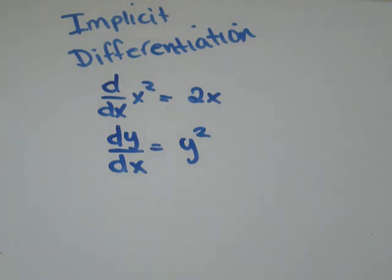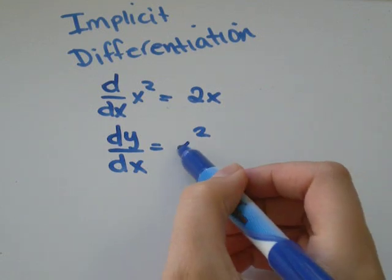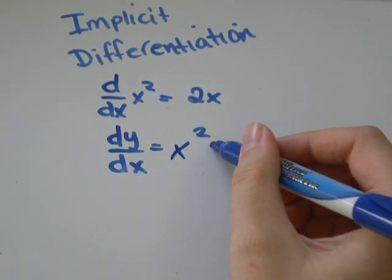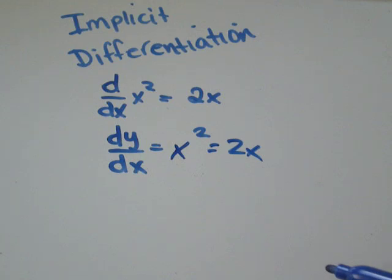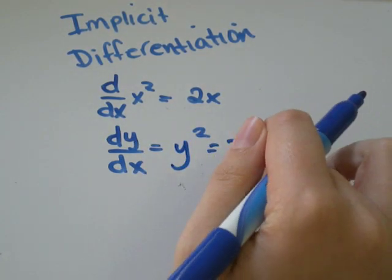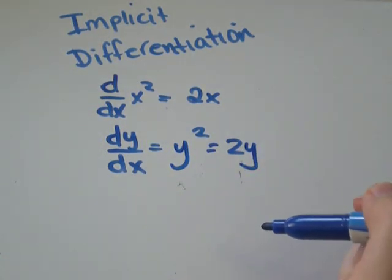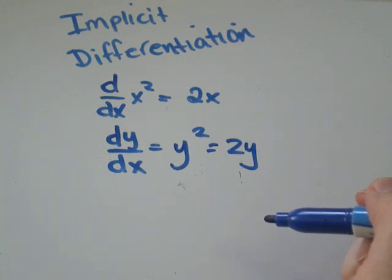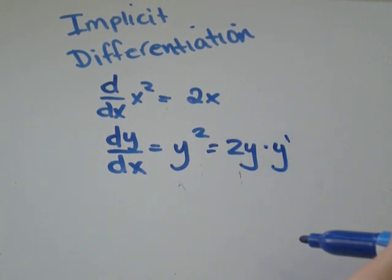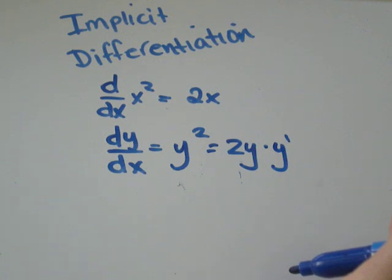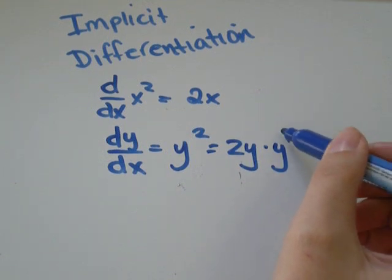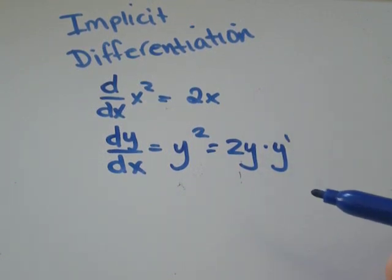So why don't we do the implicit derivative of y². The first thing you do is you think, if this was x, what would the derivative be? It would be 2x. But it's not x, it's y. And y is some function we would imagine in terms of x. We don't know what the function is. So we then have to multiply by whatever the derivative of y is, which we don't know. And the symbol for that is just y', which we call y prime.